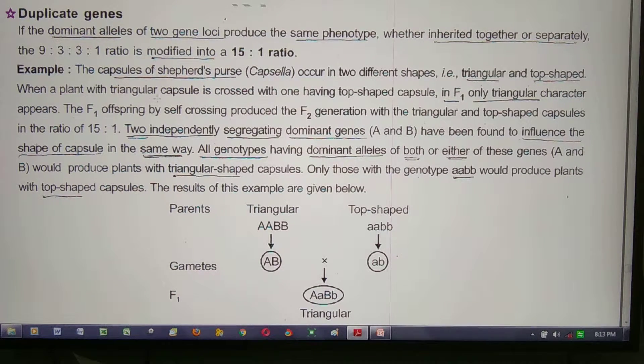When a plant with triangular capsule is crossed with one having top-shaped capsule, in F1 only triangular character appears. The F1 selfing produces F2 generation with triangular and top-shaped capsule in the ratio 15 to 1.